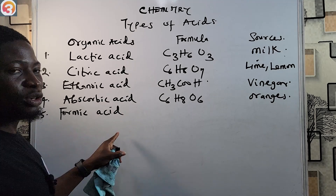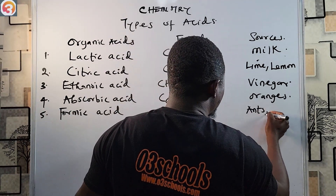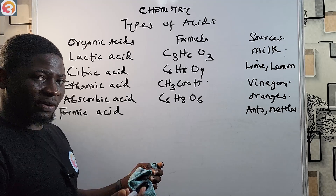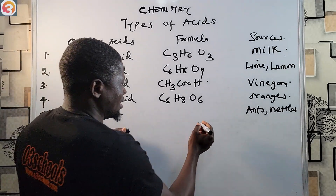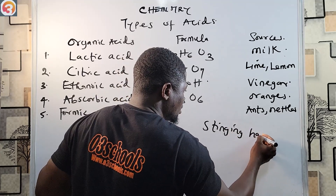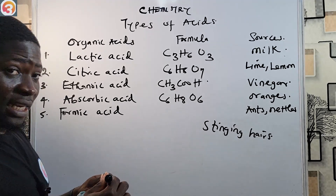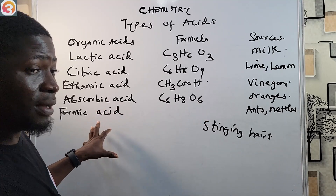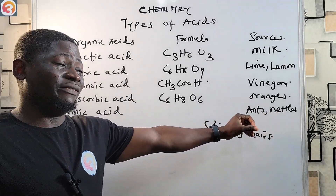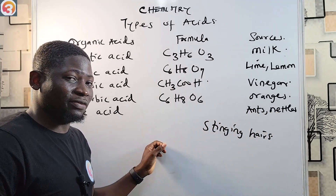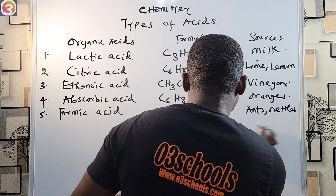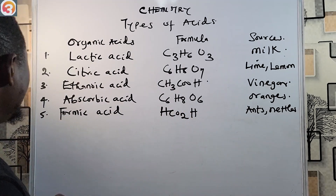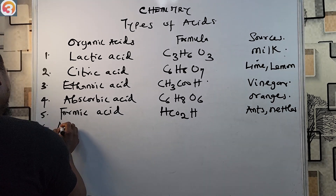Number five: formic acid. Formic acid is gotten from ants or nettles. Nettles are flowering plants with stinging hairs. The chemical formula of formic acid is HCOOH.